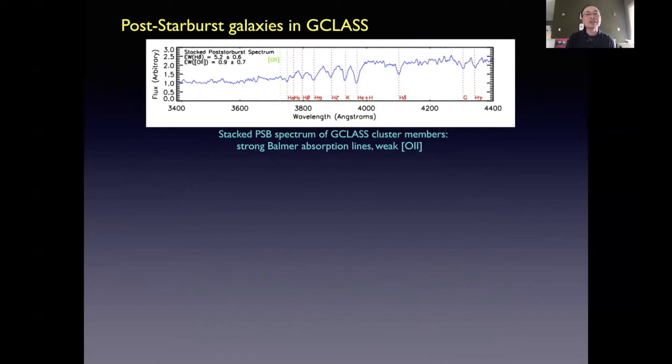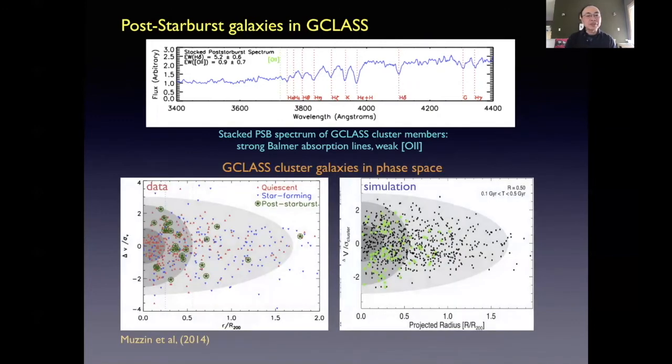Here's a stacked spectrum of post-starburst galaxies in GCLASS from about 25 galaxies. Post-starburst galaxies basically have very strong Balmer absorption lines and weak O2 lines. Here we plot the position of these post-starburst galaxies, shown as green dots, on the velocity versus radius phase diagram of the clusters. As you can see, the post-starburst galaxies have quite a different distribution from both the quiescent and the star-forming galaxies. On the right, we show a simulation. The best-fitting simulation is to have the star-formation quenching occurring at about 0.5 R200, and with a timescale on the order of 0.1 to 0.5 gigayears.